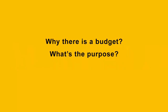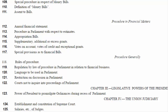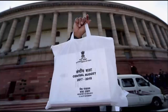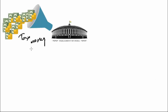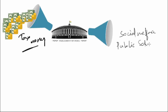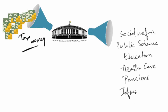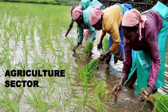Why is there a budget? What is the purpose behind it? If you look at the Constitution of India, Article 112 talks about annual financial statement, and it is from here the Parliament came up with what is commonly known as the Union Budget of India. The reason we need a budget is to create a spending plan for the money the government collects in terms of tax.